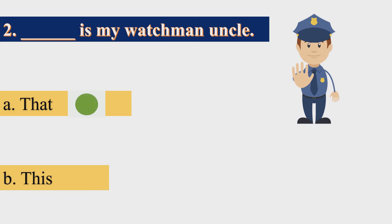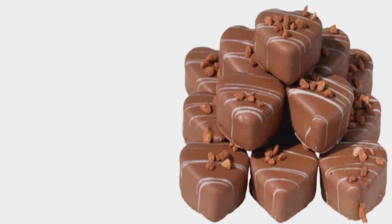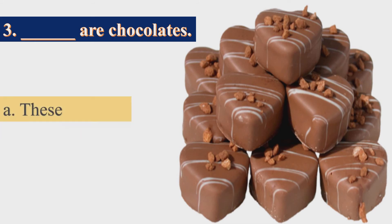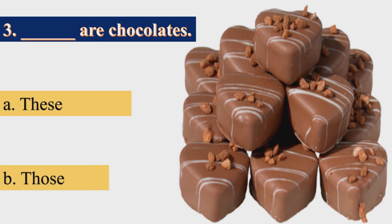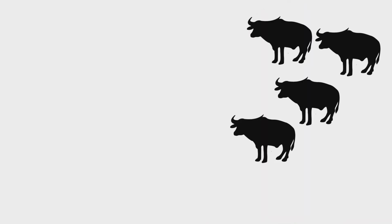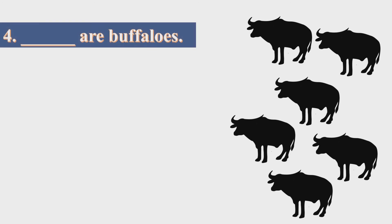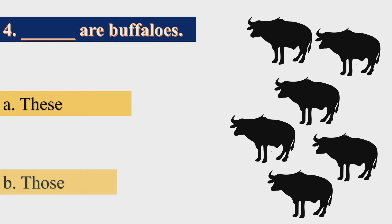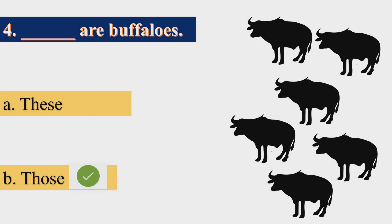Because the watchman uncle is standing far away, we use 'that.' Next: 'These are chocolates' or 'Those are chocolates'? The correct answer is 'These are chocolates' because these chocolates are more than one as well as they are near us. Next question: 'These are buffaloes' or 'Those are buffaloes'? The correct answer is 'Those are buffaloes' because they are more than one as well as far from us.